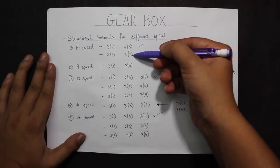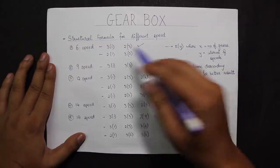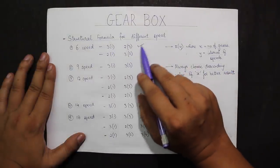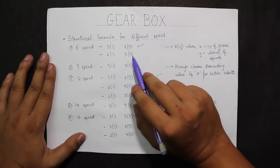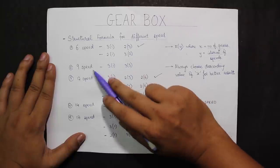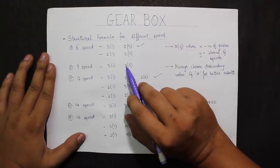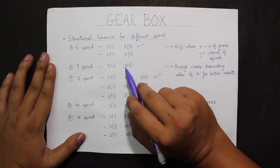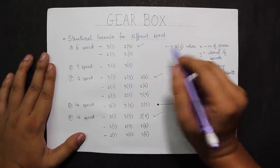For instance, in a 6-speed gearbox I can have two types of combinations: 3¹×2³ and 2¹×3². Similarly, for a 9-speed gearbox I can have only one combination — three gears with one interval and then three gears with a speed variation of 3.